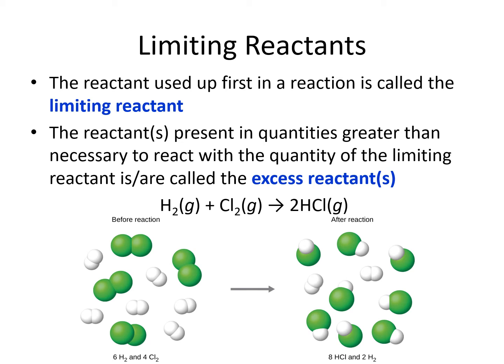Let's look at a reaction. We have H2 plus Cl2 making 2 HCl. Those coefficients of 1, 1, and 2 just tell us the ratio of things that are reacting. For each H2 molecule that we put in, one molecule of Cl2 has to react along with it, and we end up getting 2 molecules of HCl out. Let's say we put in 6 molecules of H2 and 4 molecules of Cl2. That's not actually a 1 to 1 ratio like in our balanced chemical equation.